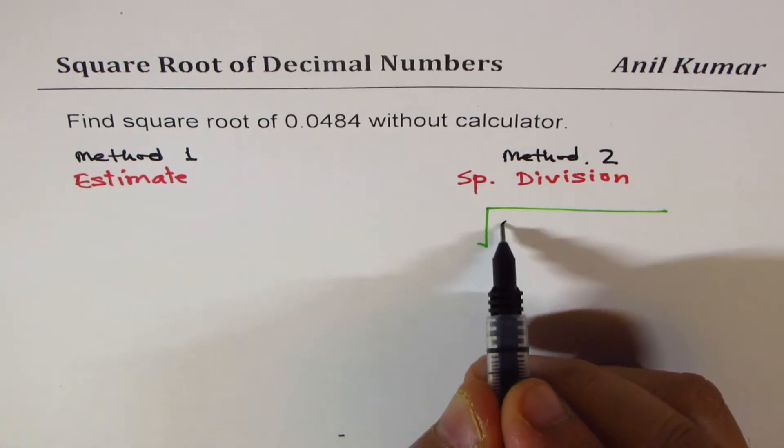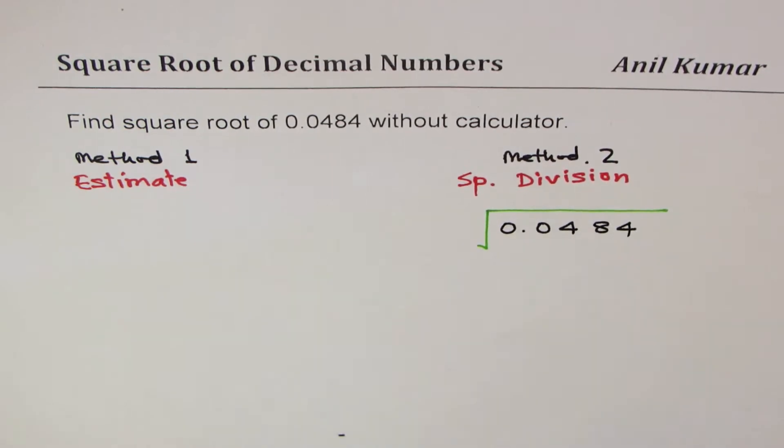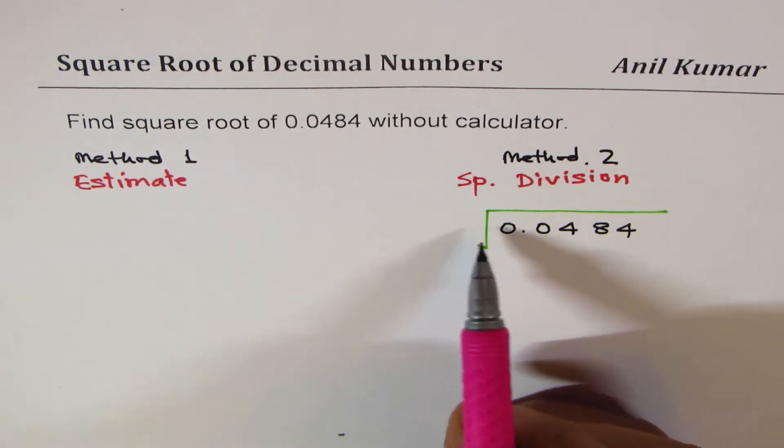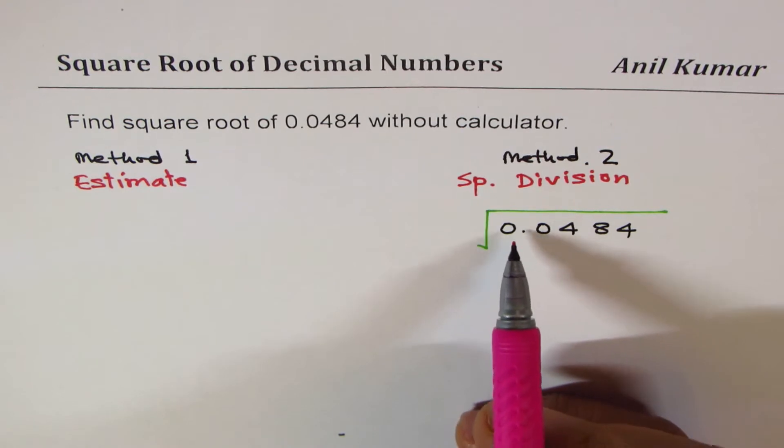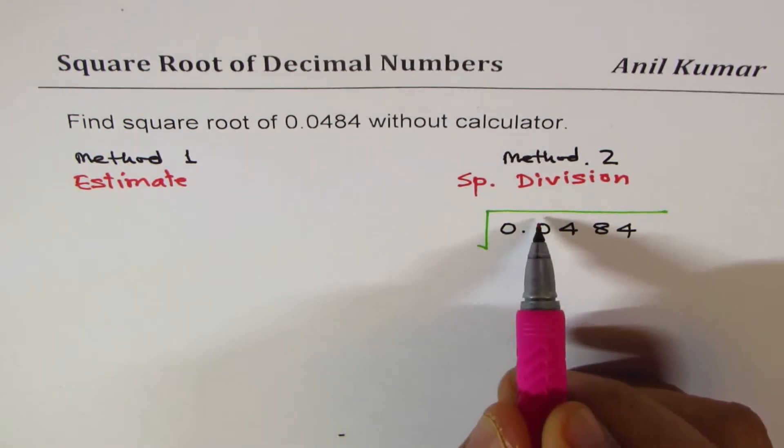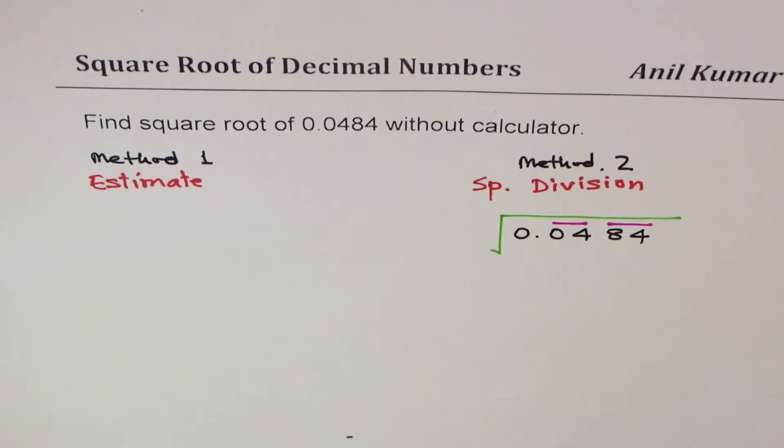We write the number as 0.0484. Grouping of the number is done from decimal both sides in groups of 2. On the left side we only have 0, so we'll focus on the right side. These are my two groups.